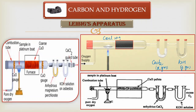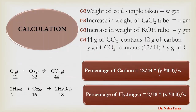You have taken the coal sample of weight W grams. To find the percentage of carbon and hydrogen: the calcium chloride absorbs moisture, so before and after combustion the increase in weight of CaCl₂ is proportional to the amount of H₂O formed. Similarly for CO₂, weigh the KOH before and after absorption — the increase in weight corresponds to the amount of CO₂ formed. Supply the pure and dry oxygen, combust the sample with catalyst and gauges, absorb H₂O in the first tube and CO₂ in the second.